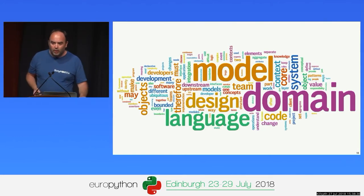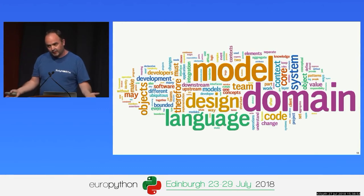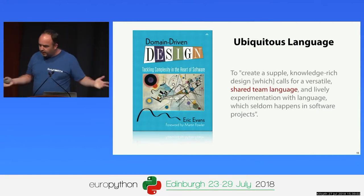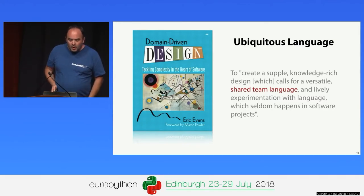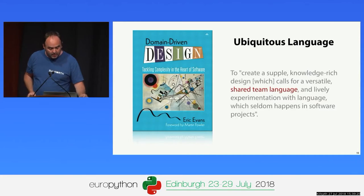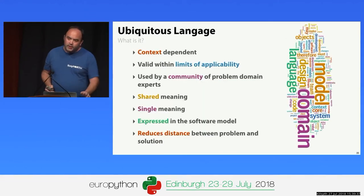One of the key things in a DDD project is to learn the domain's language. Rather than imposing our own language on the domain, we take the language from the problem domain into our solution. This is called the ubiquitous language — ubiquitous meaning used everywhere. One key objective is to create a supple, knowledge-rich design which calls for a versatile shared team language — shared not just amongst developers but everybody involved — and lively experimentation with the language. It takes time to discover a language; you won't get it right first time.